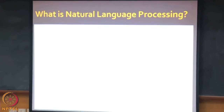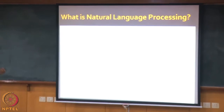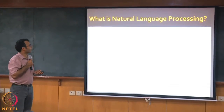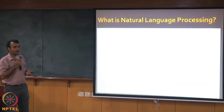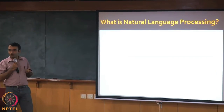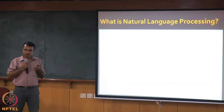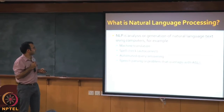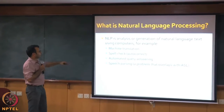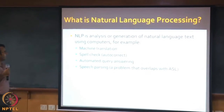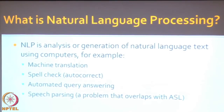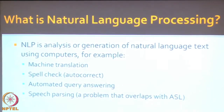What is NLP? What do you understand by NLP? Basically, what is the difference between NLP and computational linguistics? NLP is actually an engineering discipline — it is basically solving problems of understanding natural language text using engineering methods. It uses linguistics. For example, it could be used for machine translation, spell check or autocorrect, automated query analysis where you ask a computer a question and it gives you an answer.